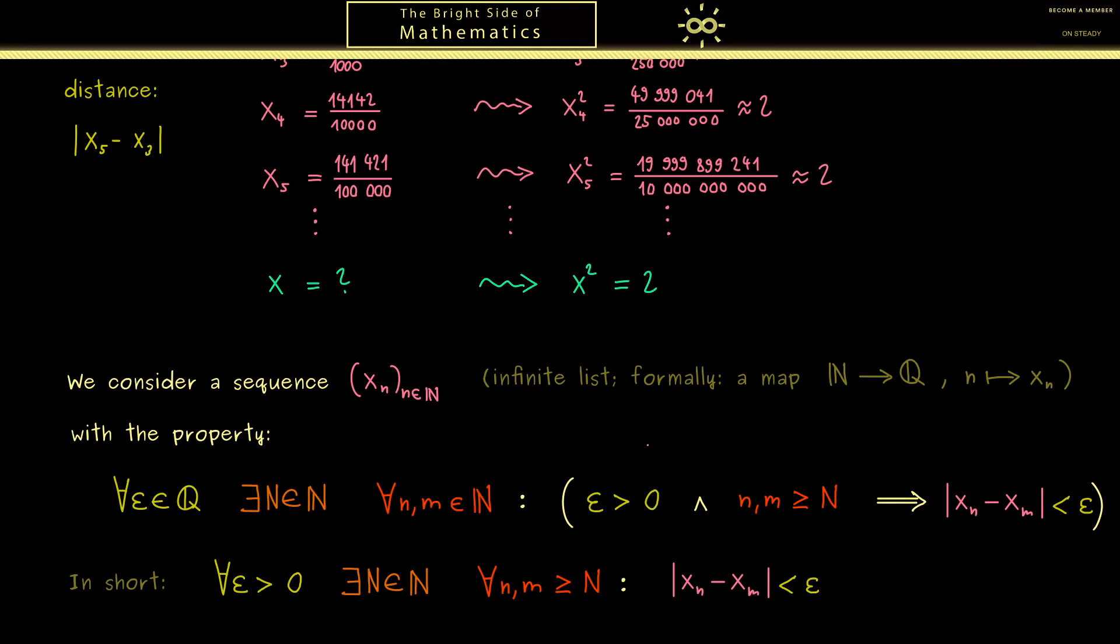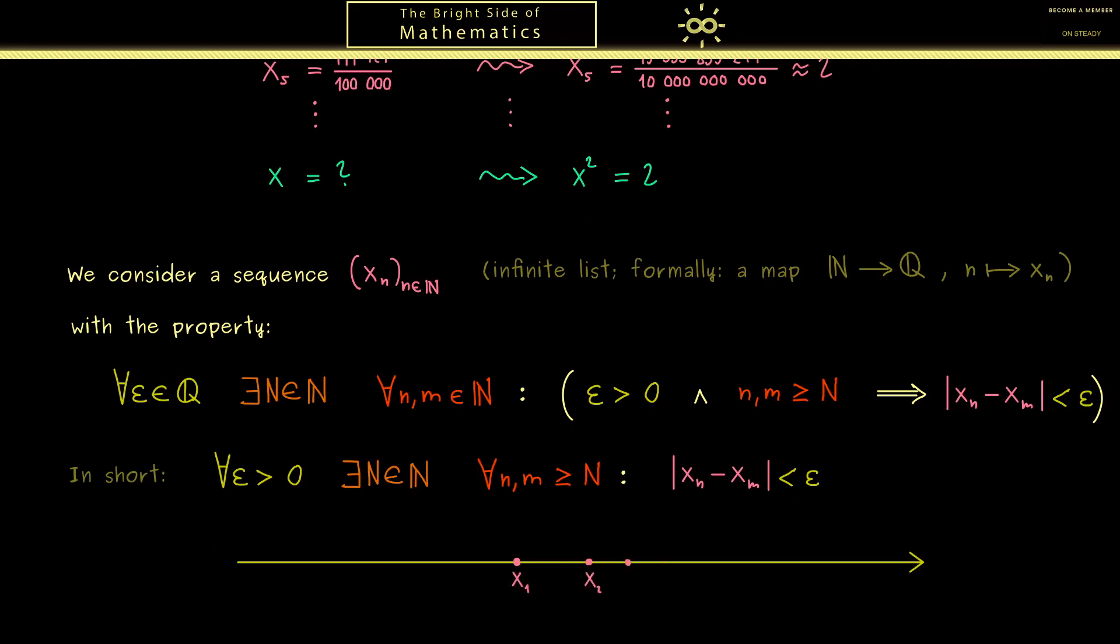In order to get an idea for this, let's look at the number line again. The important thing to note is that we have infinitely many sequence members. So maybe they accumulate here. The property from above now means that you can always choose any small section of the line, where the distance from left to right is just given by ε. And then only finitely many members could lie outside. The crucial part here is that you can make this ε as small as you want and this still holds. In other words, this correctly describes the limit process we had above.